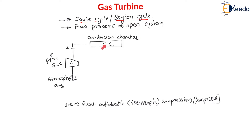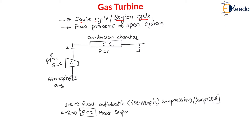This high temperature, high pressure compressed air is then passed to the combustion chamber. In the combustion chamber, heat is supplied at constant pressure. Therefore, the second process, 2 to 3, is constant pressure heat supply in the combustion chamber.